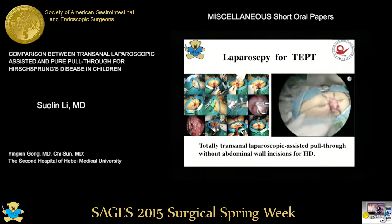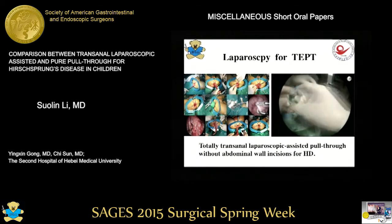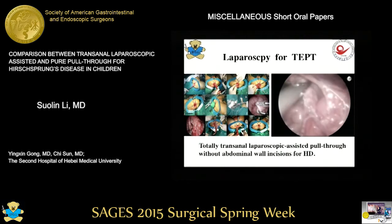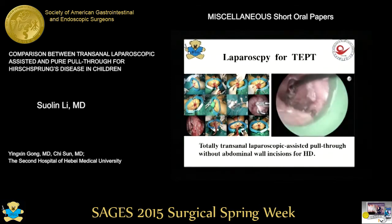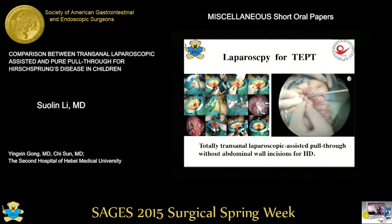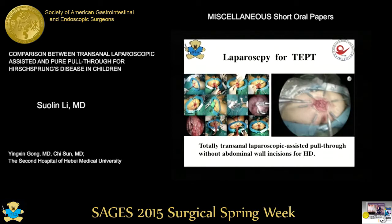The proximal rectum is closed and the rectum mucosa dissection is secured with ligation, avoiding fecal leakage and allowing for biopsy. A transanal multi-channel single port is placed and instruments are inserted. With direct transanal laparoscopic observation, the procedure of exploration and colon mobilization are much the same as classic laparoscopic pull through. Then the mobilized sigmoid is pulled and resected at the anus, and the anastomosis to the rectum mucosa is completed with absorbable suture.